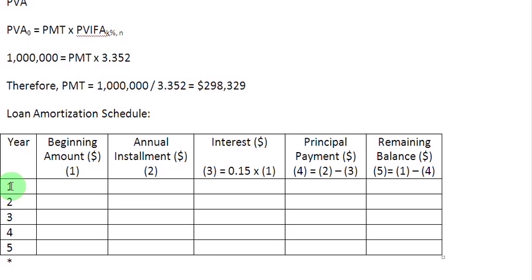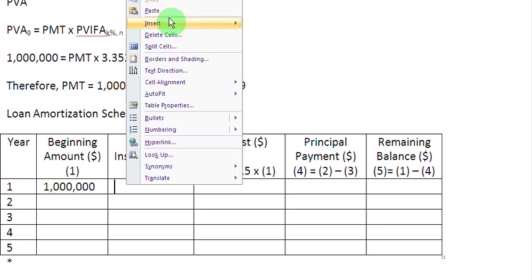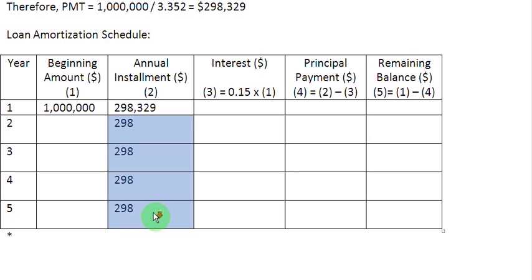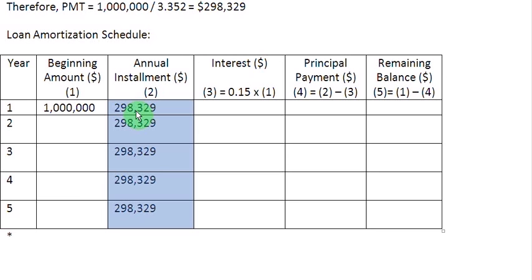Let us start filling up this table. The beginning amount at the start of year 1 is our loan amount: 1 million dollars. The annual installment is $298,329, and this amount is going to remain constant over the entire period. So we copy and paste this value into all the cells of the installment column — $298,329 for each of the five years.